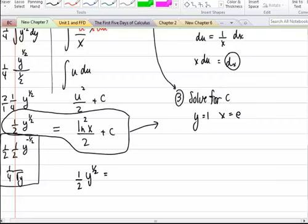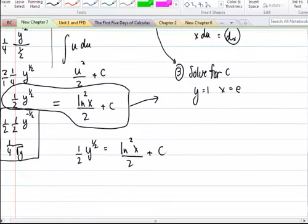I'm just going to write out the whole equation again. When I plug in 1 half of 1 to the 1 half. That equals the natural log function squared when I plug in e into that, divided by 2 plus a constant.